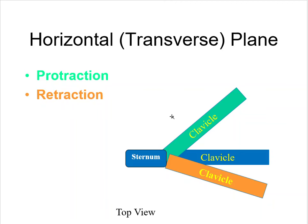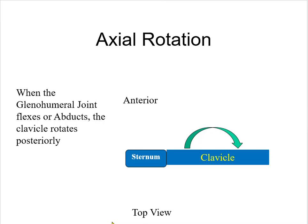We also have axial rotation. So this is the top view, and your clavicle kind of rolls forward and anterior and posterior around this sternum. We're looking at a top view.